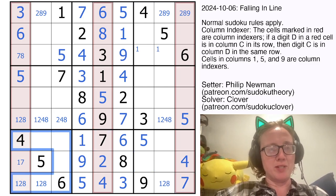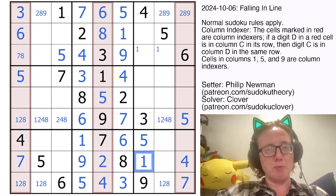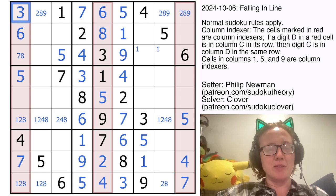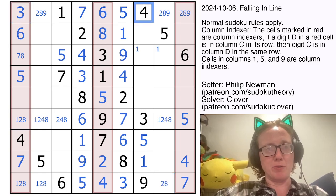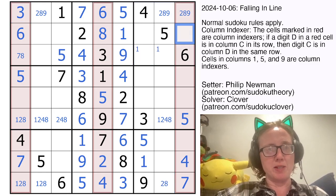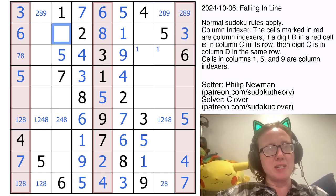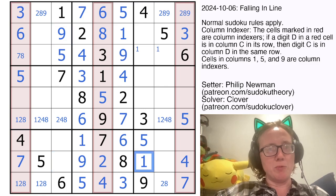So there's only one possible position for seven in the bottom left region, which places a one here. And similarly, there's only one possible position for three in the top right region, which places a three here. That three indexes my nine, and the seven indexes a one.